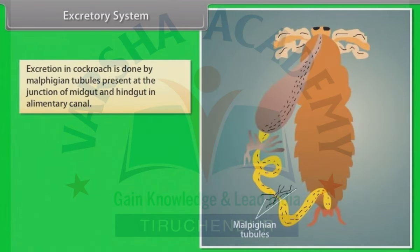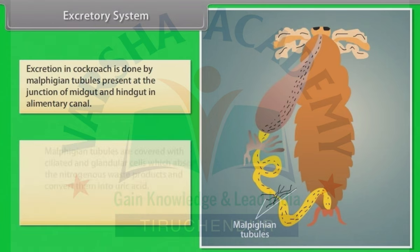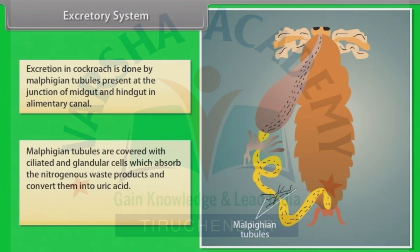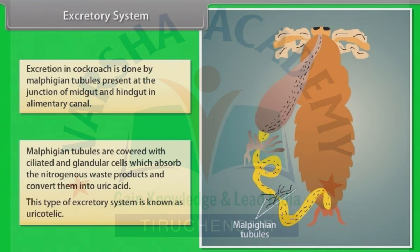Excretory system: Excretion in cockroach is done by Malpighian tubules, present at the junction of midgut and hindgut in the alimentary canal. Malpighian tubules are covered with ciliated and glandular cells, which absorb nitrogenous waste products and convert them into uric acid. This type of excretory system is known as uricotelic.